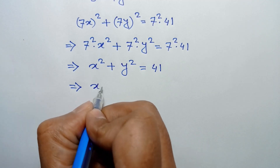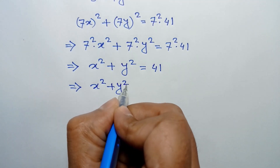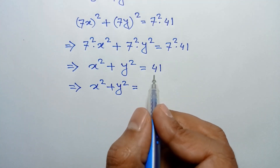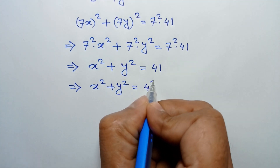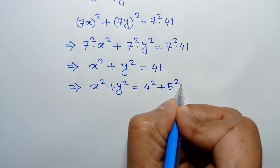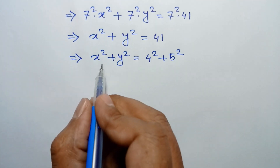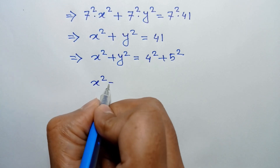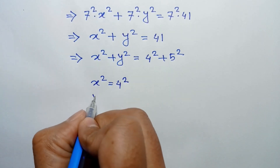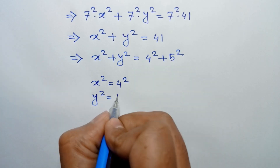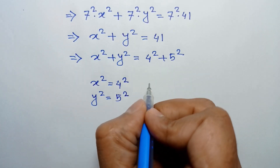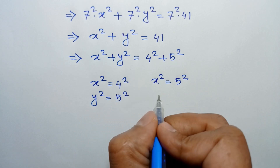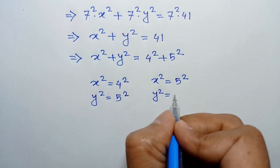Now, x squared plus y squared equals 41 can only be expressed as 4 squared plus 5 squared. Comparing both sides, we get x squared equals 4 squared and y squared equals 5 squared, or x squared equals 5 squared and y squared equals 4 squared.